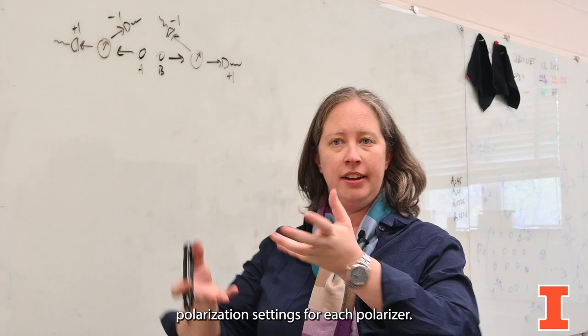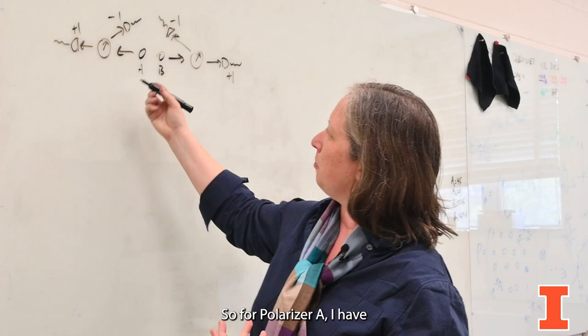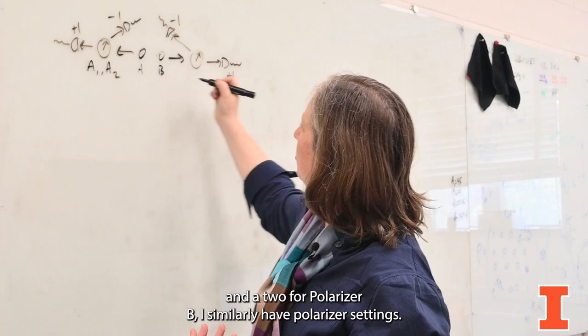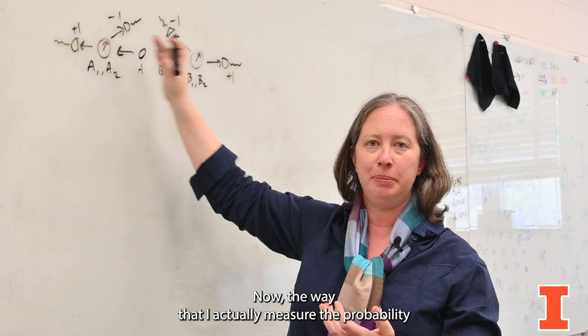Now I'm going to say that I have two possible polarization settings for each polarizer. Obviously I can rotate them however I want, but with two settings this is the minimum that we need in order to demonstrate the weirdness of quantum entanglement. For polarizer A I have polarizer settings A1 and A2. For polarizer B, I similarly have polarizer settings B1 and B2. These are just the angles of the polarizer that I'm going to set.